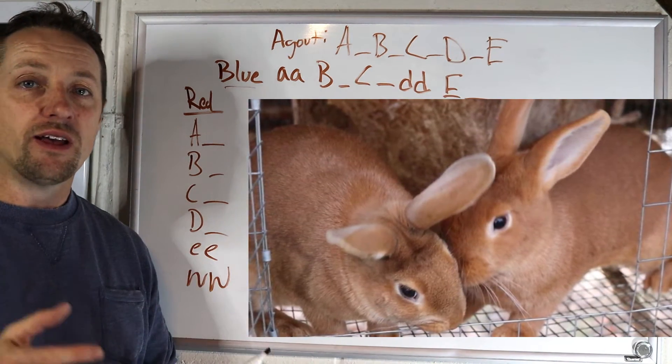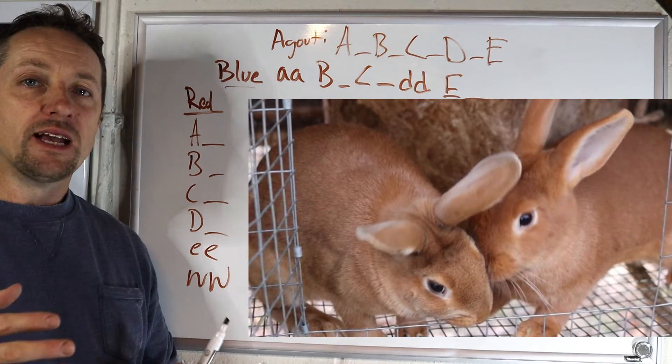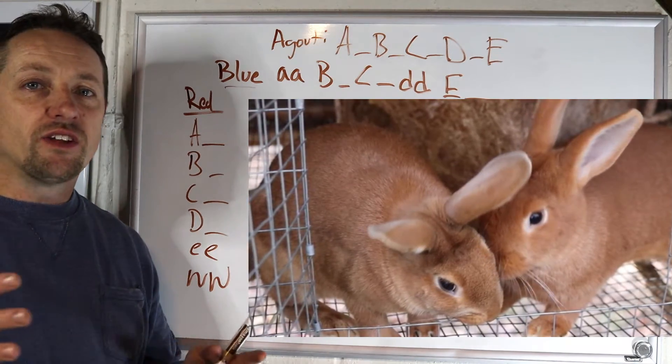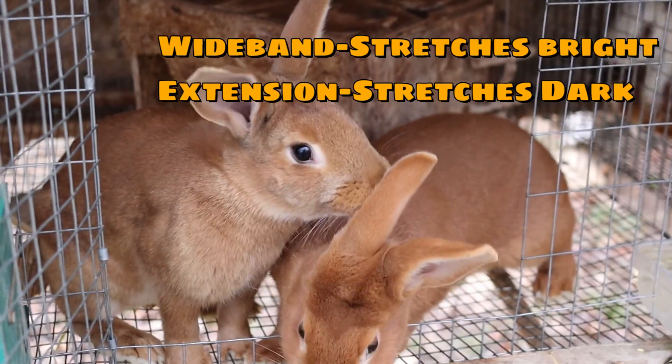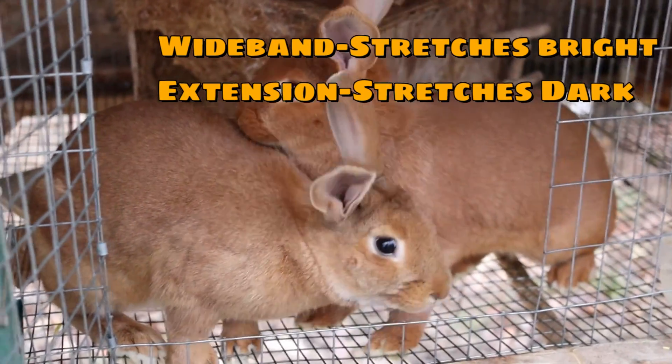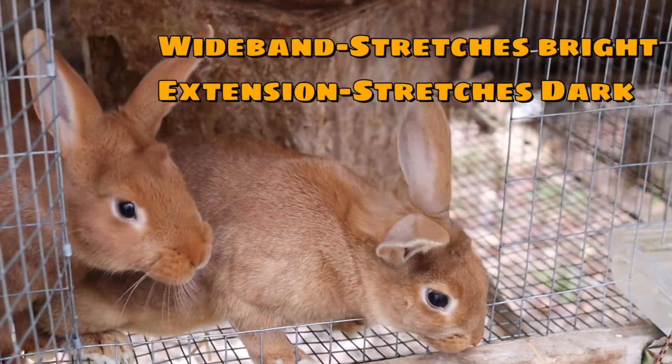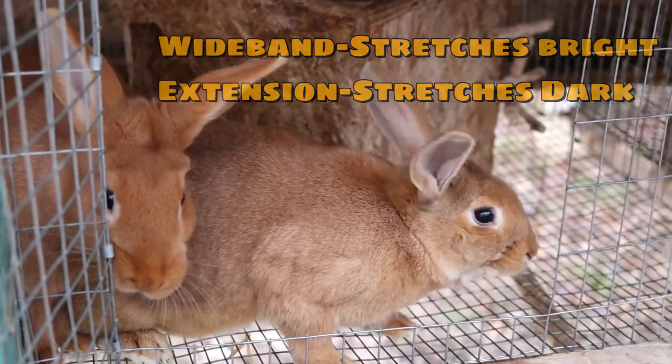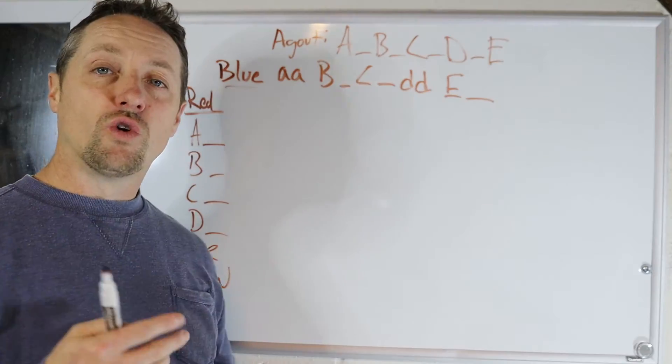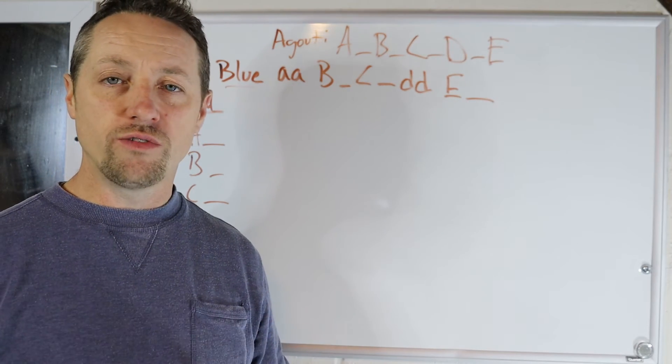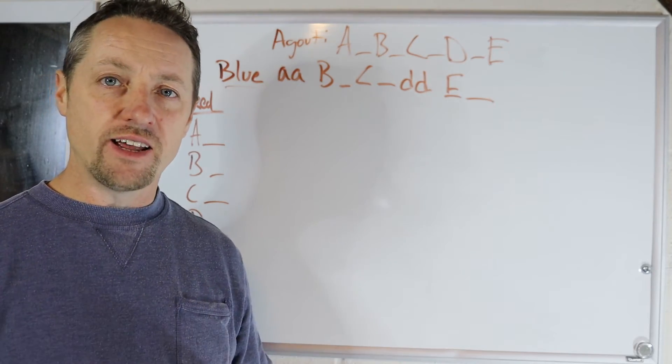Now, a full extension is the capital E, but non-extension is basically kind of like wideband, where wideband is stretching the color, the colorful, the bright color wide in the color shaft. And non-extension is not showing any of the dark pigment in the E locus. So they kind of work the same, but they're not the same. So red, golden fawn, orange, these are all pretty much the same genetics.